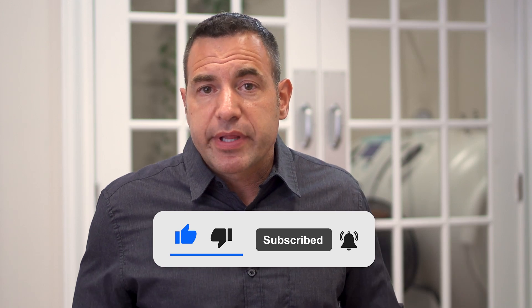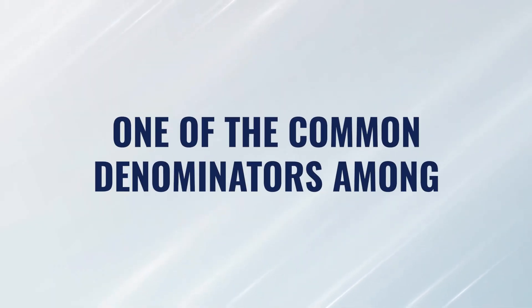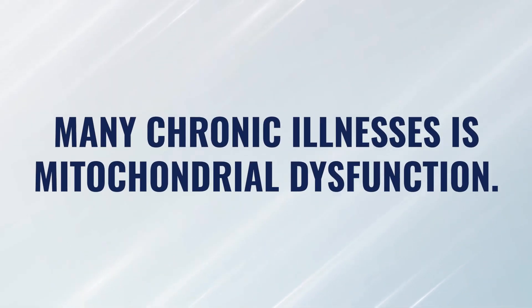One of the common denominators amongst almost all chronic illnesses — be it heart disease, cancer, diabetes, stroke, autoimmune diseases, or neurodegenerative diseases — is mitochondrial dysfunction. Mitochondrial dysfunction leads to a reduced level of ATP production. A reduced level of ATP production means that each one of your cell types, each one of your organs, now functions at a lower and slower rate because it can't create the energy it needs to function at levels that maybe it did years prior.